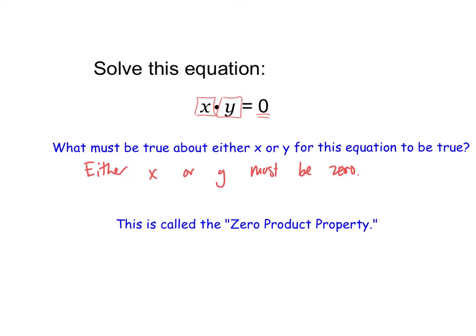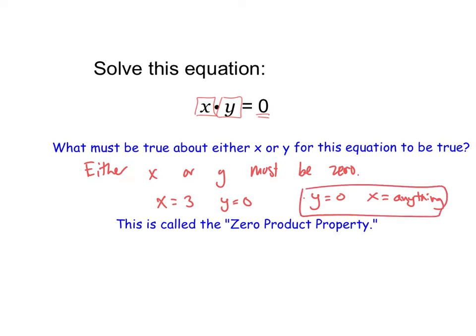Let's pretend x equals three — then y has to equal zero. If y equals zero, then x could be anything; it doesn't have to be zero. So, we've got two examples here: if you know that one of them is not zero, then that forces the other one to be zero. If you know one of them is zero, then the other thing could be anything.